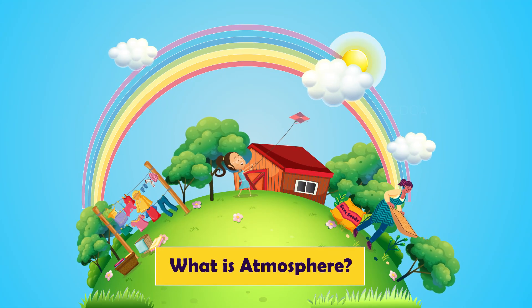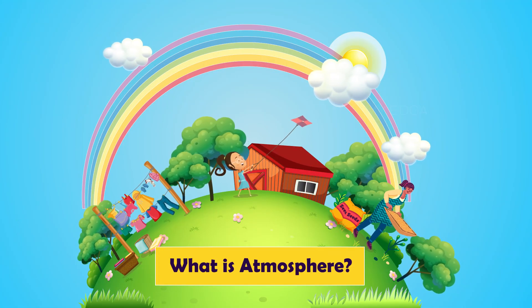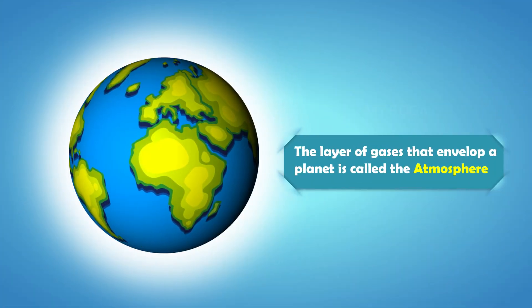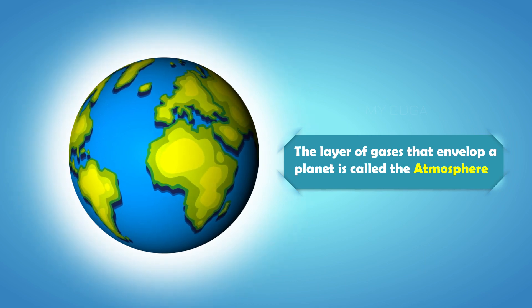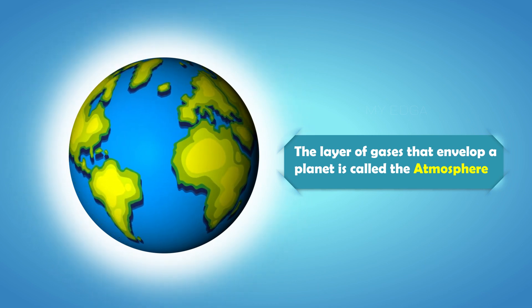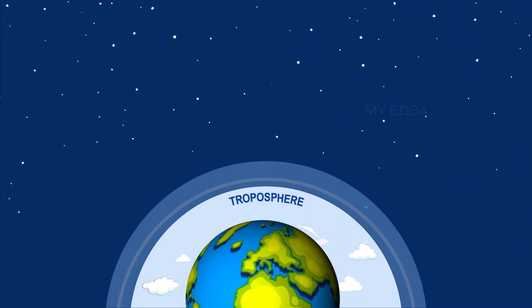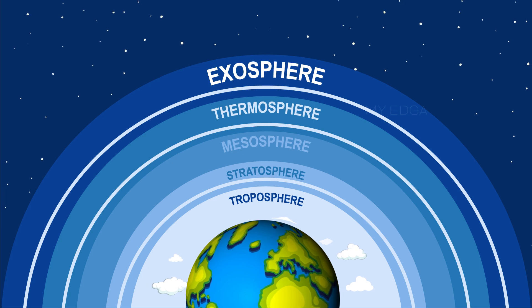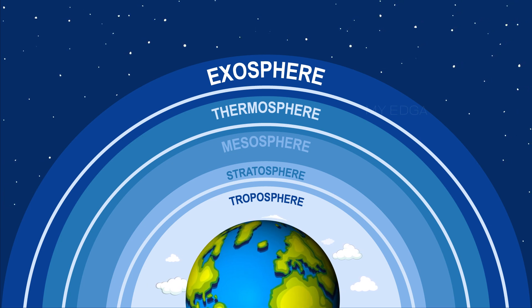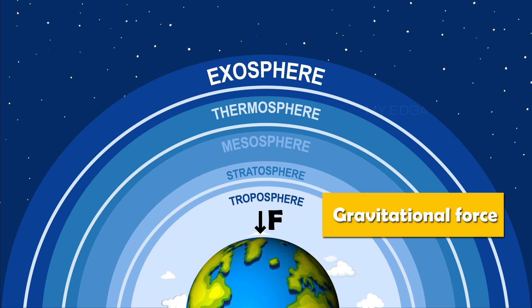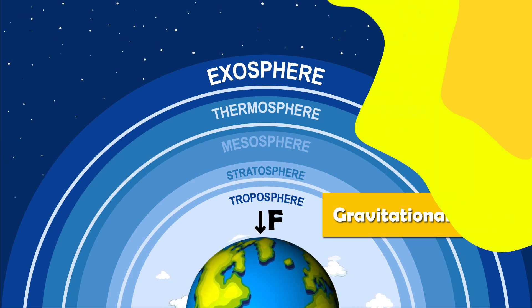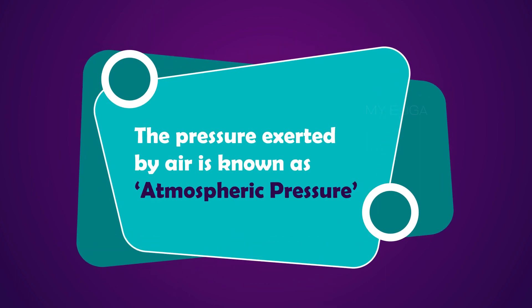But what is atmosphere? We all know that air is all around us, and this layer of gases that envelop a planet is called the atmosphere. The atmospheric air extends up to many kilometers above the surface of the Earth. It is the Earth's gravitational force that holds this layer of gases above the Earth's surface. The pressure exerted by this air is known as the atmospheric pressure.